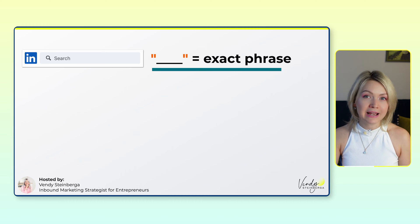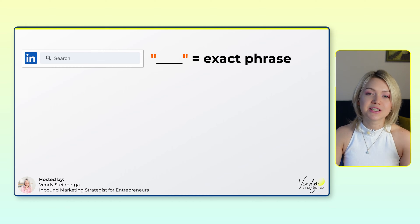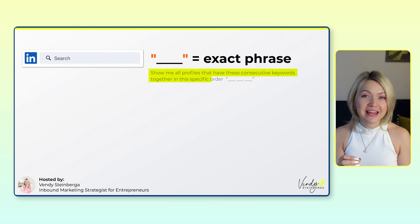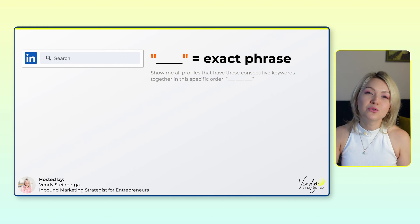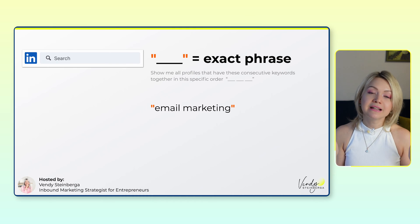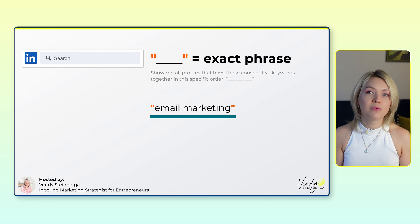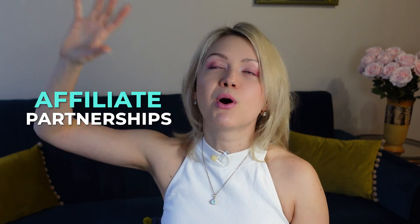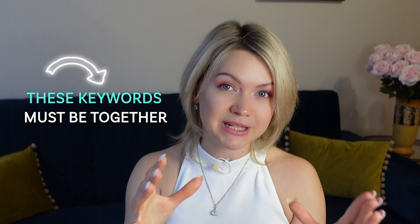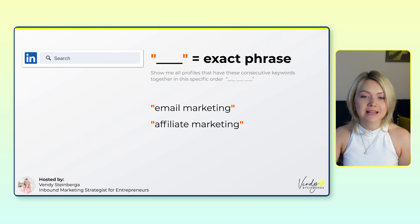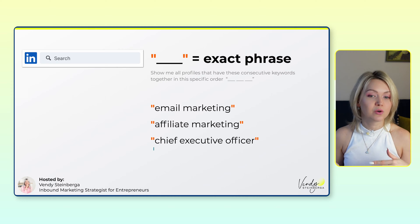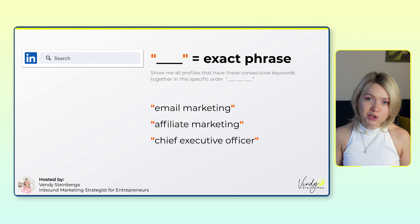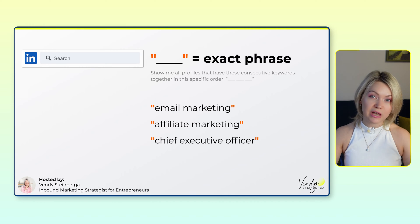Then we have exact phrase, which uses quotation marks. The way you think about this is you're telling LinkedIn, show me all profiles that have these consecutive keywords together in this specific order. Whenever you have two or more keywords, just use quotation marks. So I'm telling LinkedIn I'm looking for people in "email marketing". Because there are so many different marketing versions — email marketing, affiliate marketing — whenever you have two or more keywords together, you want to use quotation marks. Otherwise, it's going to look for maybe affiliate partnerships and marketing training separately, not those two keywords together. So as long as you have two or more keywords, always use quotation marks — for example, "chief executive officer" or "business development manager".